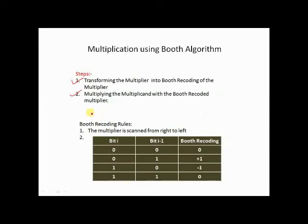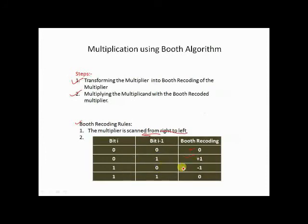First we need to learn how to record a multiplier into a Booth recorded multiplier. The rule of Booth recording is that the multiplier is scanned from right to left. The table is: if the two bits are 0,0 the Booth recording is 0; if 1,0 it is +1; if 0,1 it is -1; and if 1,1 it is 0.